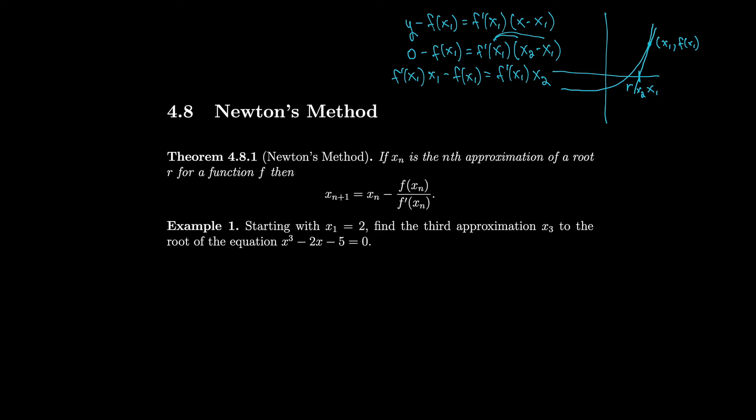If we were to do this entire process again, we would look at the point above, draw another tangent line, and that would get us even closer to the root. Then we could do that again and again, keep drawing tangent lines as we get closer and closer to r. This entire process is called Newton's method.